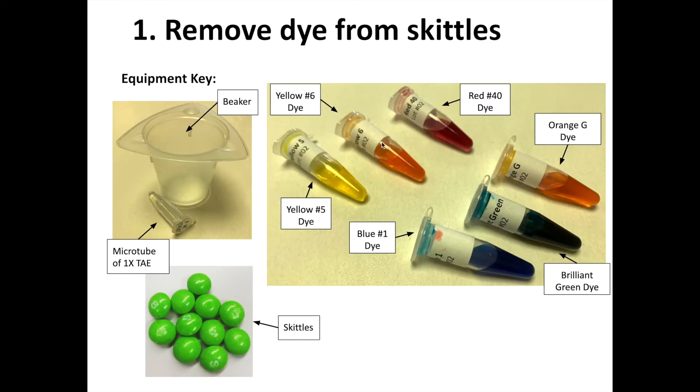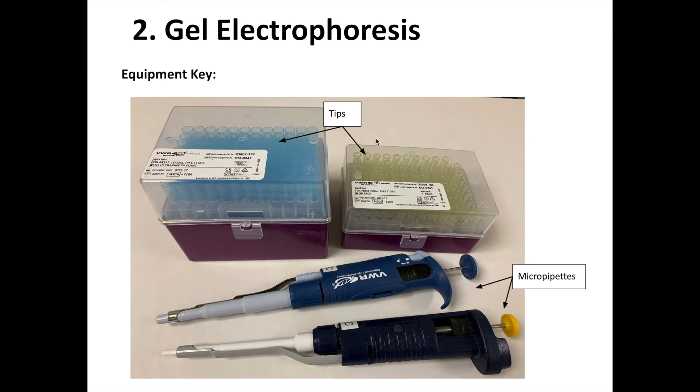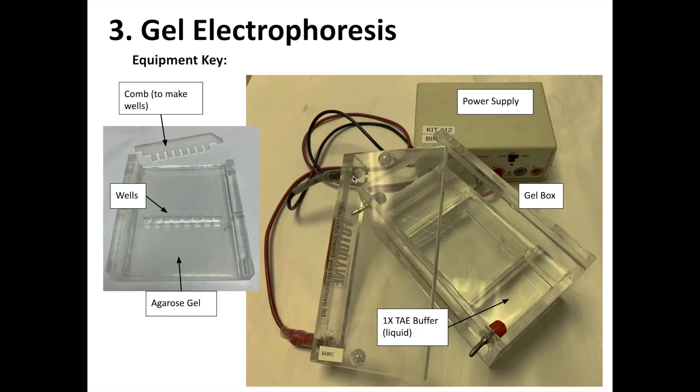Here are the materials we used to remove the dye. Now to do the gel electrophoresis, we'll need our tips for our micropipettes. Here is our agarose gel, and we use this comb to make wells, little holes inside of the gel. And we're going to place that gel inside of a gel box.